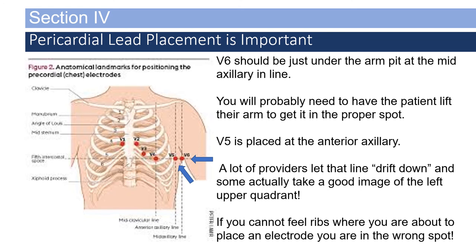So you've placed V1, V2, V3, and V4. V6 should be placed just under the armpit at the mid-axillary line at the fifth intercostal space — you'll probably need to have the patient lift their arm to get it in the proper spot. V5 is placed at the anterior axillary line, just anterior to the axillary line. A lot of providers let that line drift down into the upper left quadrant — don't do that. If you can't feel the ribs where you're about to place the electrode, you are in the wrong spot. V4 is at the mid-clavicular line, with V1 and V2 on either side of the sternum.